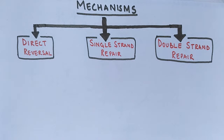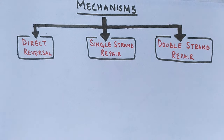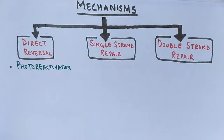The first repair method is the direct reversal method. As the name suggests, the damage to DNA is reversed and we get back to the normal DNA as it was before the damage. The damaged area or lesion is repaired directly by specialized proteins. It is the simplest and most energy-efficient form of DNA repair. It does not require a reference template to fix the DNA, nor does it involve breaking the phosphodiester backbone. The two most common methods of direct repair are photo reactivation and alkylation, both of which will be discussed in separate lectures.